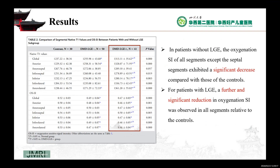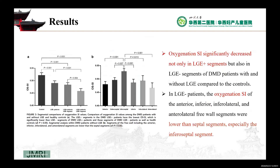Table 2 shows the native T1 and oxygenation SI for each set of segments. In patients without LGE, the oxygenation SI of all segments except the septal segments exhibited a significant decrease compared with those of controls. Notably, for patients with LGE, a further and significant reduction in oxygenation SI was observed in all segments relative to controls. Oxygenation SI significantly decreased not only in LGE-positive segments, but also in LGE-negative segments of DMD patients with and without LGE, compared to controls.